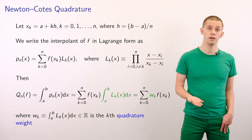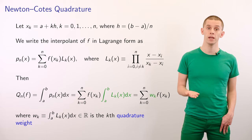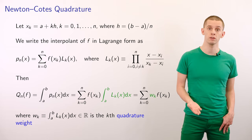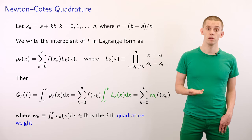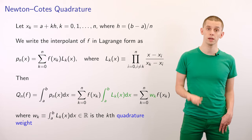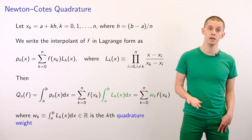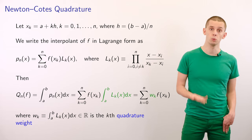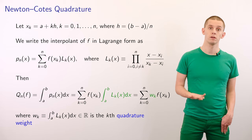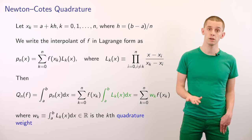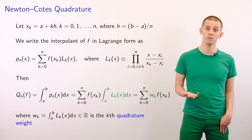Let's say that xk is equal to a plus h times k, for k equals 0 to n, where the spacing h is given by b minus a divided by n. Then we could write the interpolant of f in Lagrange form as pn of x equal to the sum from k equals 0 to n of f of xk times lk of x, where lk is the Lagrange polynomial associated with the point xk. Then qn of f will be equal to the integral from a to b of pn of x dx, which equals the sum from k equals 0 to n of f of xk times the integral from a to b of lk of x dx.